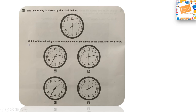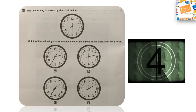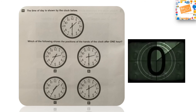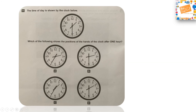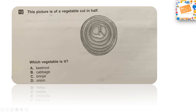Next question: The time of a day is shown by a clock. Which of the following shows the positions of the hands of the clock after one hour? After one hour, the minute hand will remain where it is, but the hour hand will move by one block. So if it is currently between one and two, after one hour it will be between two and three. The right answer is Option B, showing 2:30.